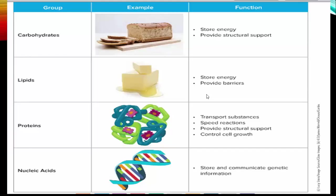To wrap up, we have four macromolecules: carbohydrates, lipids, proteins, and nucleic acids. Carbohydrates and lipids are both made of carbon, hydrogen, and oxygen. Carbohydrates provide structural support and store energy, but it's short-term energy. Any carbohydrates you consume and don't use will get converted to lipids and turn into long-term energy. Carbing up before a football game is so you have energy during the game.